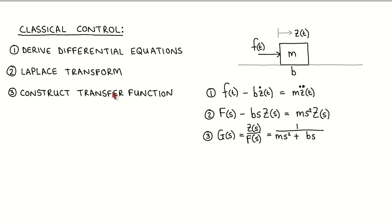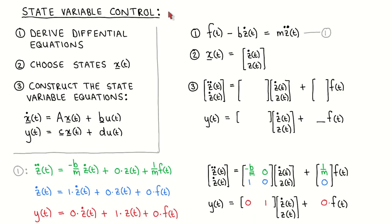One then uses the transfer function to analyze the system dynamics and design a controller. As a simple example, consider an object with mass m experiencing a time-varying force f, which is the input, as well as viscous friction with coefficient b. The output is the displacement z. The differential equation is given by Newton's second law, where the sum of forces equals mass times acceleration. After applying the Laplace transform and rearranging terms, we get the transfer function.